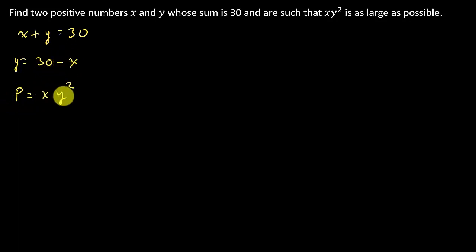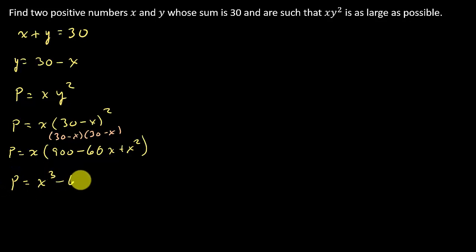So let's plug the 30 minus x in for y. So I get p equals x times 30 minus x squared. And so what I'm going to do now is I'm going to go ahead and multiply this out. So just keep in mind, all I did here is this is 30 minus x times 30 minus x, and I foiled that out. That's all I did. And so now I have p is equal to x cubed minus 60x squared plus 900x. And I distributed the x here.